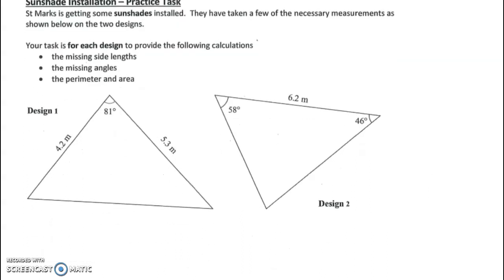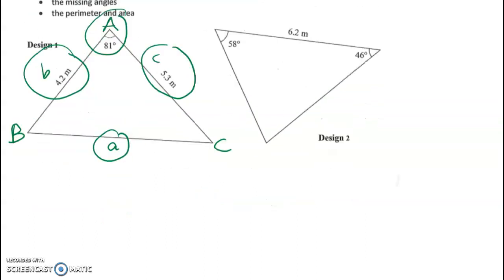I'm going to start by labeling things clearly. I'll make this point A, this vertex big B, and this vertex big C. This is side length b, this unknown is side length a, and this one here is side length c. As I said before, we can use the cosine rule to get this length using these two sides and the angle in between them.